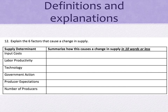Government action — also called government regulations — includes taxes, subsidies, or regulations that affect production. We saw this with price ceilings and price floors. Producer expectations is where sellers — your producers — are predicting the future. If price is going to increase later, there'll be a decrease in quantity supplied now. On the other hand, if prices will decrease later, they'll increase quantity supplied now to make as much profit as possible.